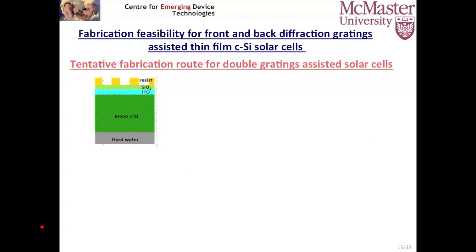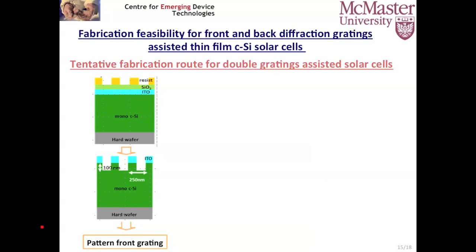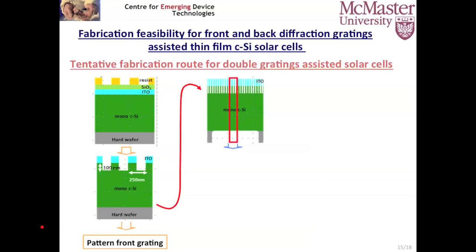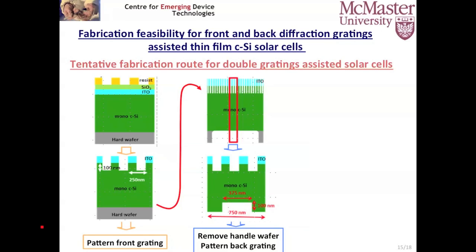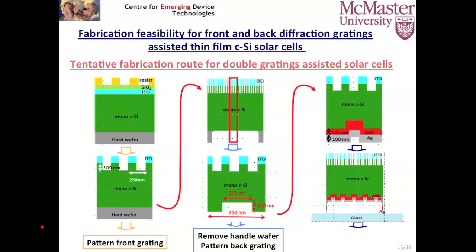Let's go through the fabrication in detail. First, we generate 1D and 2D patterns on photosensitive resist, then transfer them to the hard mask and into the monocrystalline silicon layer by etching, yielding the front grating. Then we remove the back handle wafer and pattern the back grating using laser holographic lithography and etching. Finally, we deposit the silver layer and zinc oxide layer and mount this double grating structure onto a glass wafer.